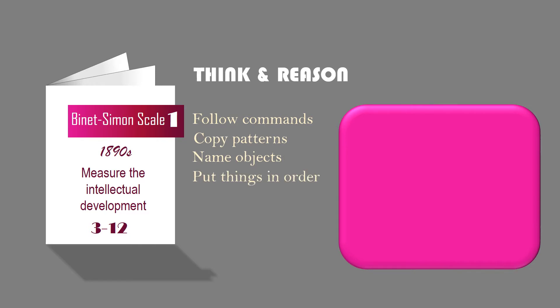From Binet's work, the term intelligence quotient, or IQ, evolved. The IQ is a ratio of mental age to chronological age with 100 as the average. So an 8-year-old who passes the test for 8-year-olds has an IQ of 100, which is the average for his or her chronological age.